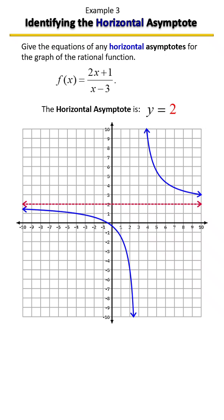And here's what your graph looks like. Notice that you have a horizontal asymptote right there going through the y-axis at 2.